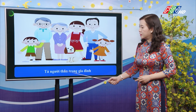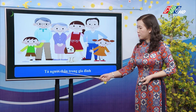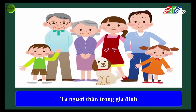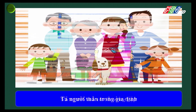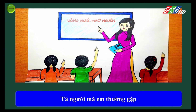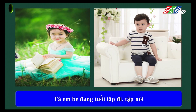Trong đề tả người, chúng ta có những đề như: tả người thân trong gia đình — có thể là ông, bà, cha, mẹ, anh, chị, em. Đề thứ hai là tả người mà em thường gặp — có thể là người hàng xóm, cô giáo, thầy giáo, hoặc bạn học cùng lớp hay khác lớp. Đề thứ ba là tả em bé đang tuổi tập đi tập nói.